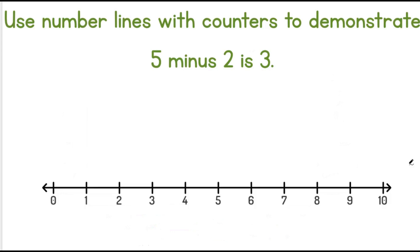Use number lines with counters to demonstrate 5 minus 2 is 3. That means we will start at the number 5, take away 2, and we get the number 3.